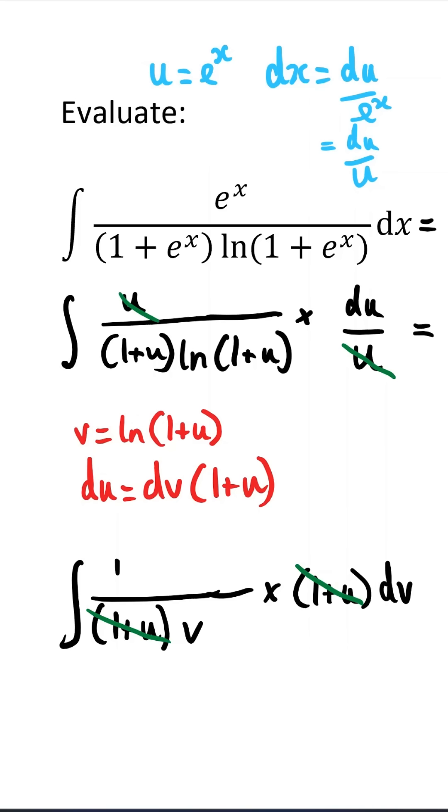So now we've just got the integral of 1 over v with respect to v. That's clearly going to be log of mod v plus a constant c.